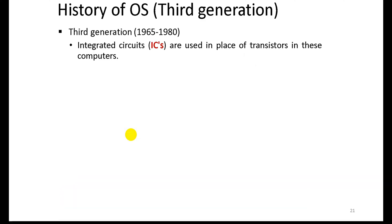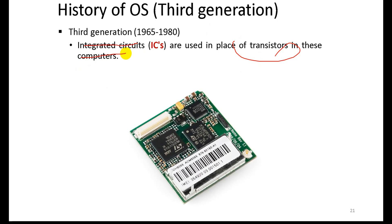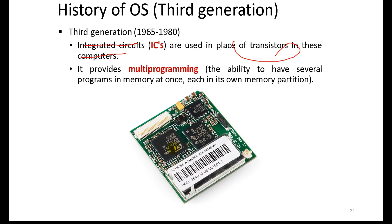In the third generation, transistors were replaced by integrated circuits (ICs). Integrated circuits are used in place of transistors in these computers. Every transistor and electronic device is integrated on this circuit. The system provides multiprogramming - the ability to have several programs in memory at once, each in its own memory partition.